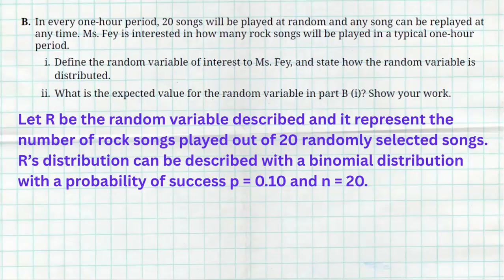Here's what I wrote for that one. I use R for rock. R is the random variable that represents the number of rock songs played out of 20 randomly selected songs. R's distribution can be described with a binomial distribution because the probability of getting a rock song stays the same. It's 10%. It does not change. And it's independent. Every song is independent of the next. And we are given a set number of songs and that is 20. So how many of those 20 songs can be rock songs? 0, 1, 2, 3, 4, 5, 6, all the way up through 20.